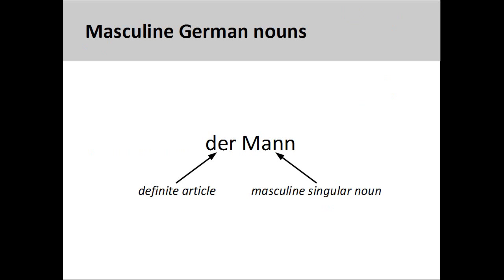The German noun 'Mann,' meaning 'man,' has a masculine grammatical gender, so its definite article is 'der.' In this case, the grammatical gender agrees with the biological gender of the noun. It is also important to note that all German nouns are capitalized.